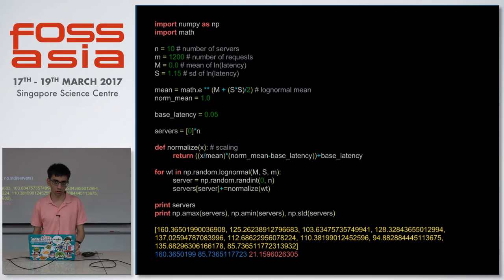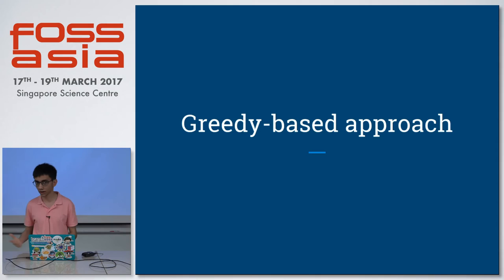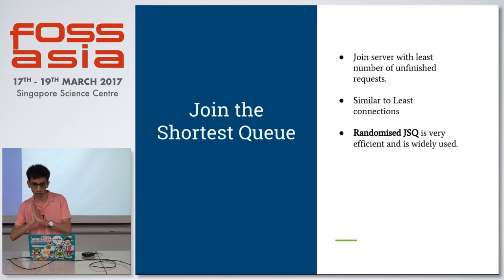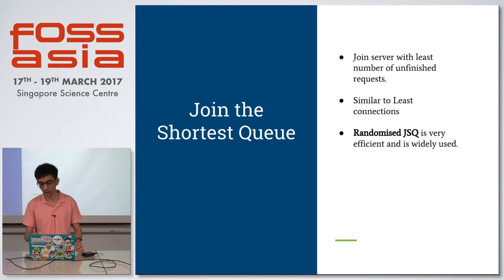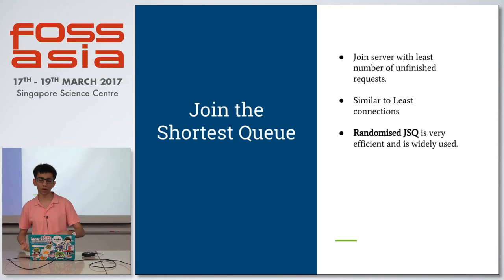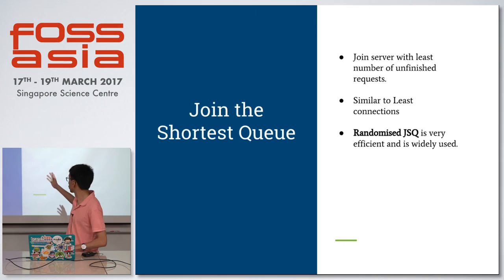There's actually another algorithm — a greedy approach that works really well, and I think it's one being used today. It's called the Join the Shortest Queue algorithm, or JSQ. Basically it routes to the server with the least number of unfinished requests, similar to least connections. We use randomized JSQ to address the edge case that least connections has: if many servers are heavily loaded and a new server is added, it'll get flooded with requests, which is not good. Randomized JSQ implements the failover capability and prevents that from happening.